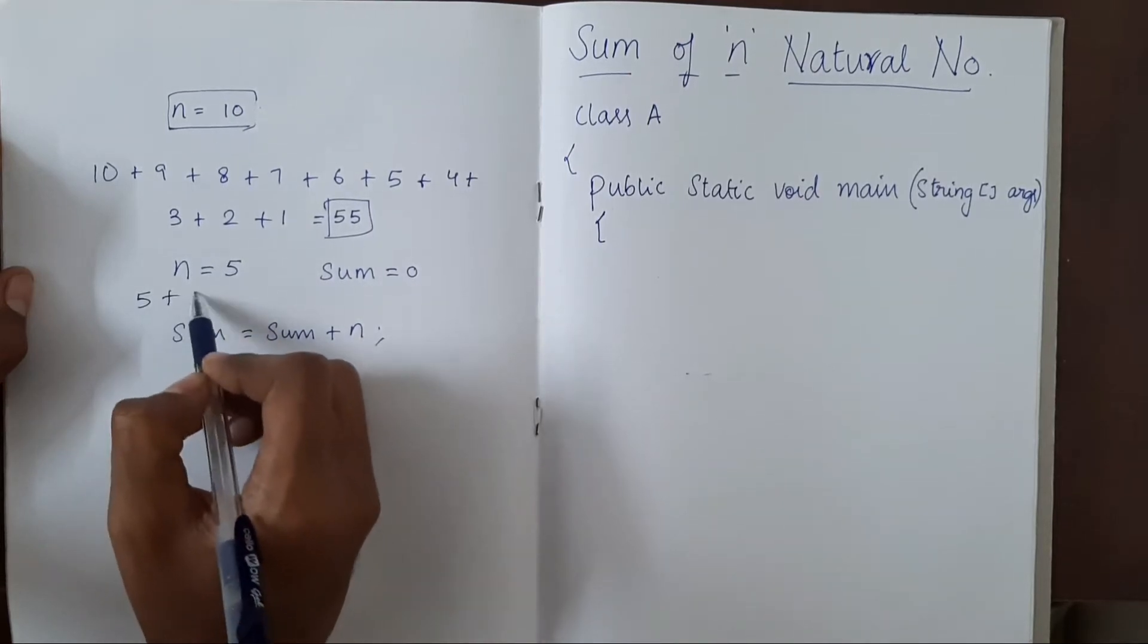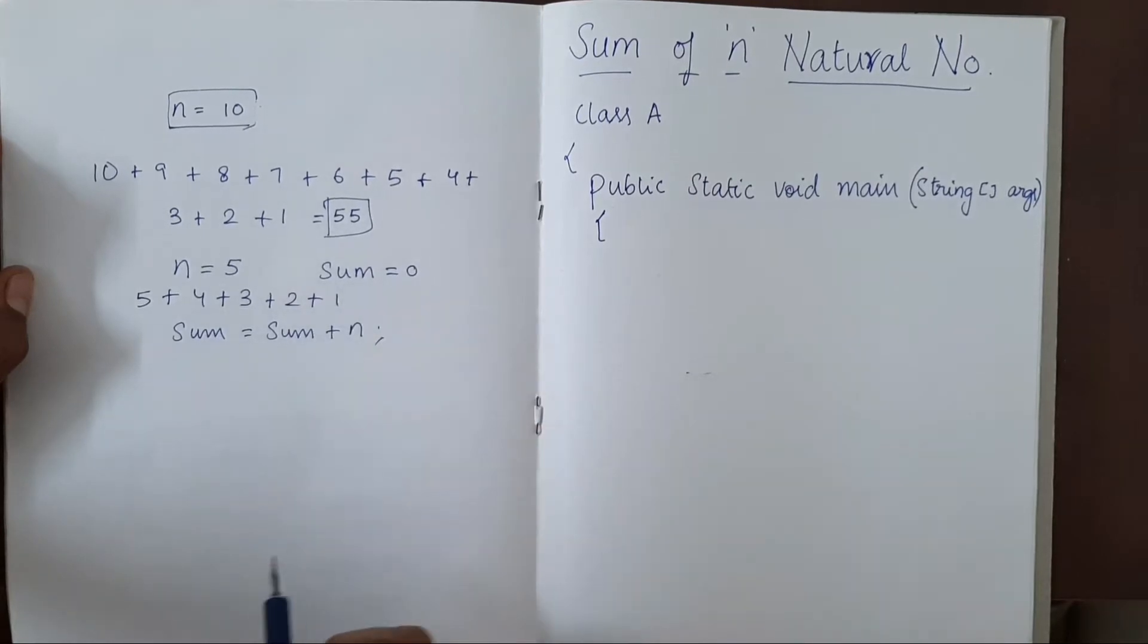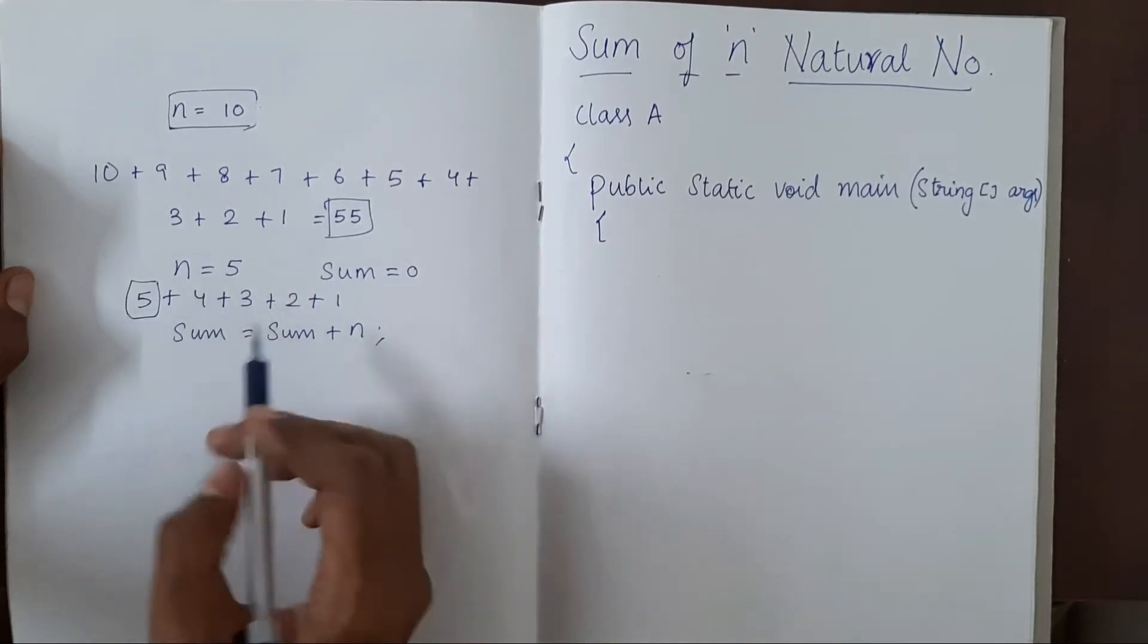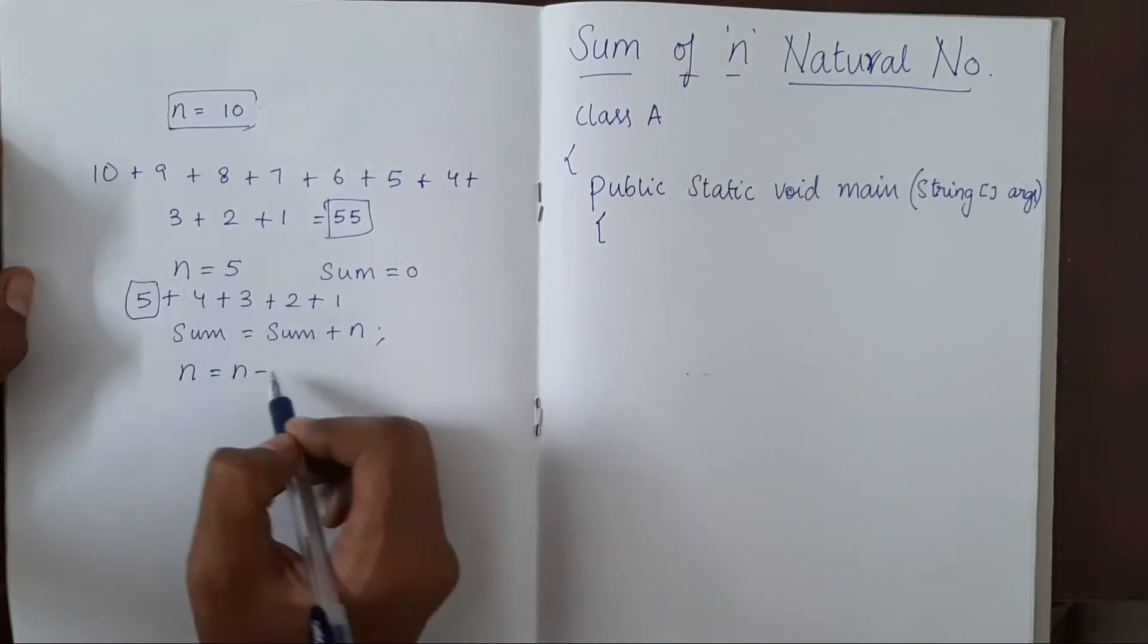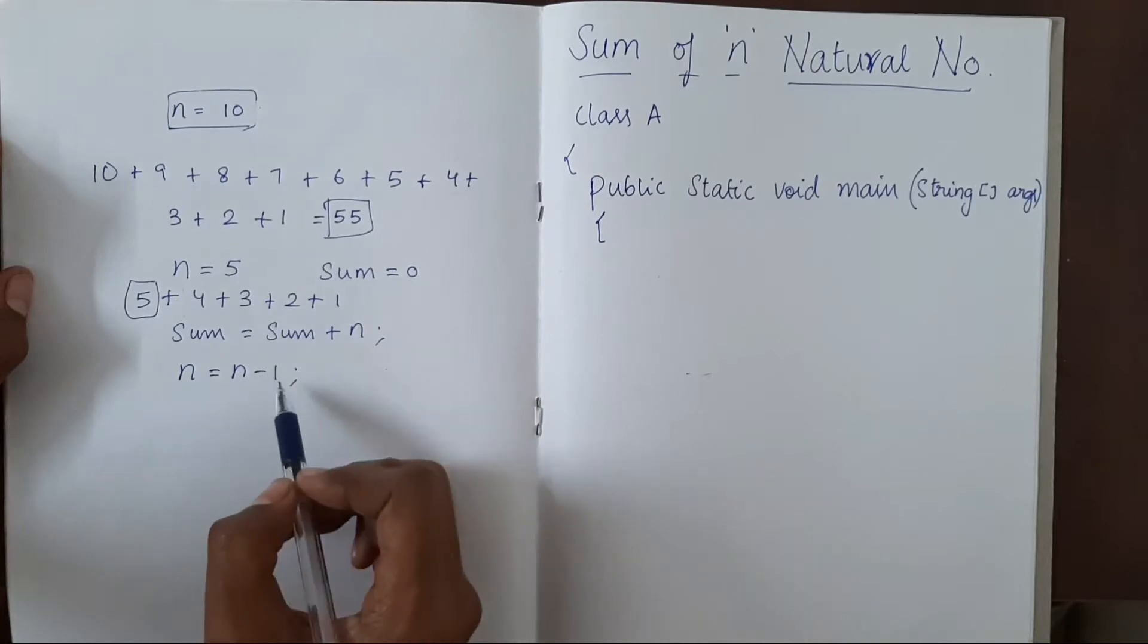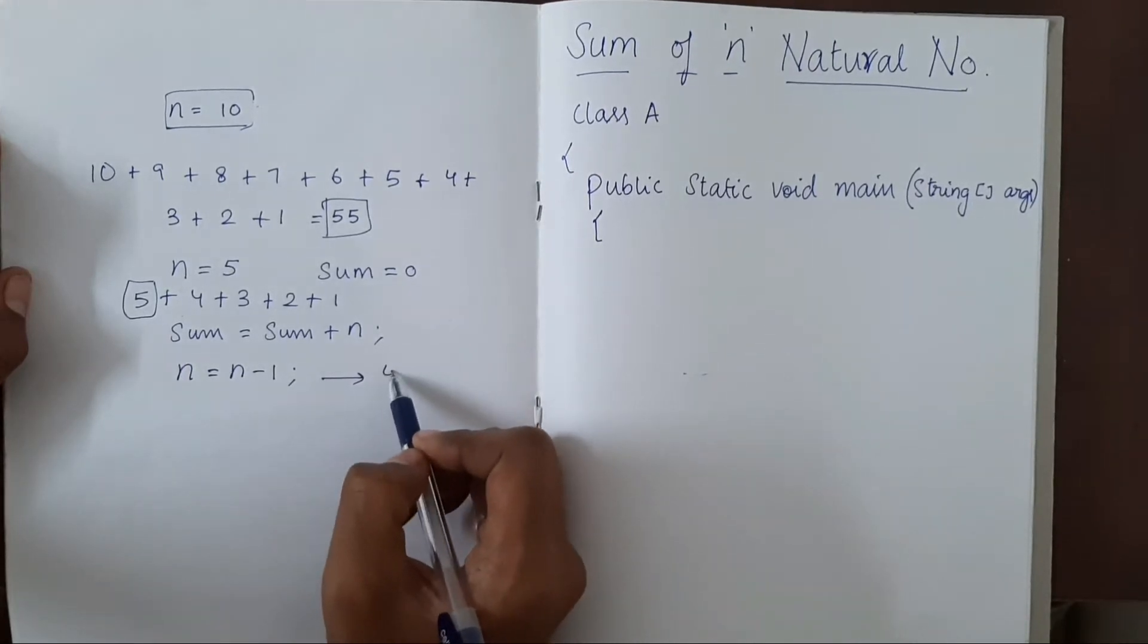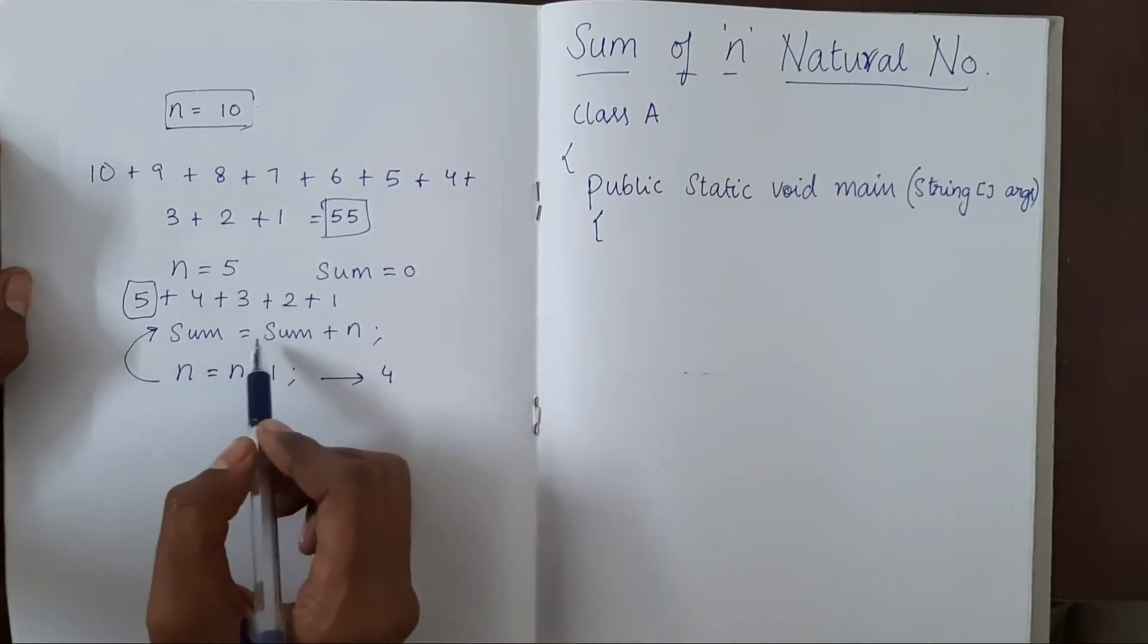This is what sum 5 plus 4 plus 3 plus 2 plus 1. So 5 has been added. Now we have to add 4. So we will reduce n by 1. So n equal to n minus 1. So here n will become 4. Now we go back. Now we will do sum equal to sum plus n.